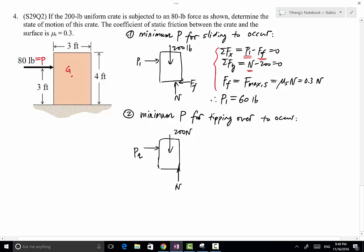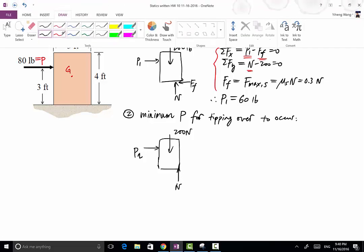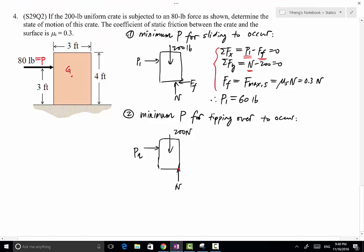the normal force now is placed at the corner. So we know the location of the normal force now. It is at the corner, let's call it point A, because we are solving for the situation when tipping is about to happen.